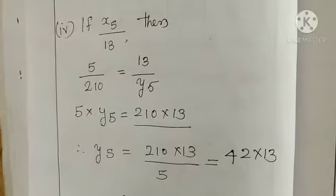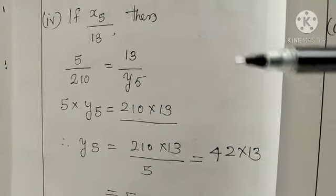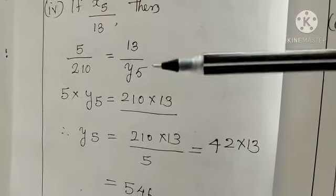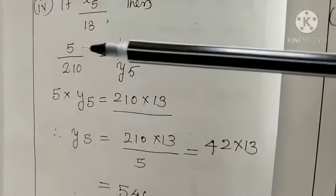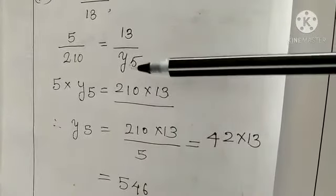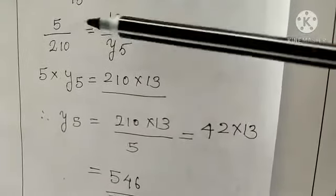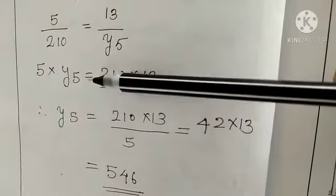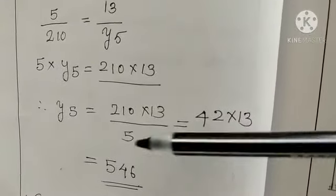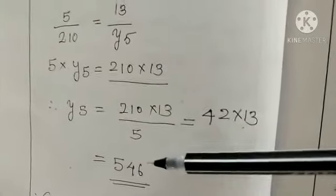At last, we will have to find the cost of 13 meters of cloth. So 13 we can take as x5, and y5. Taking the same values x1 and y1, 5 and 210. x1 by y1 is equal to x5 by y5. 5 by 210, 13 by y5. Cross multiply. 5 into y5 is equal to 210 into 13. So y5 is equal to 42 into 13, 546.